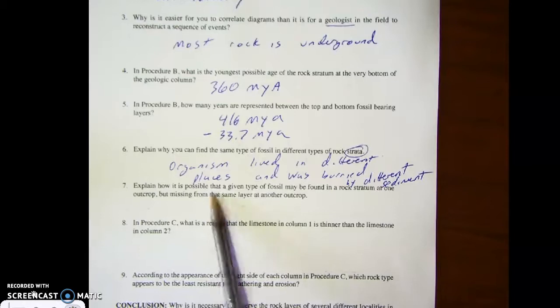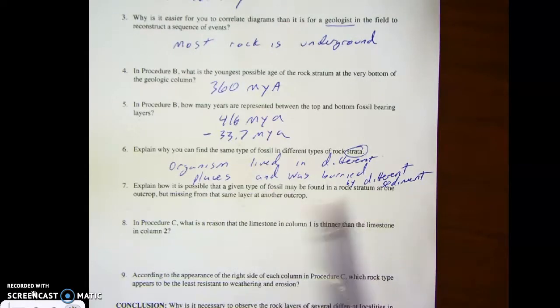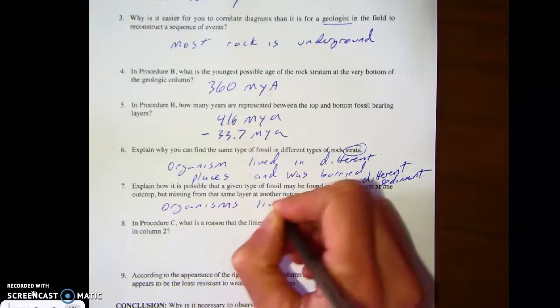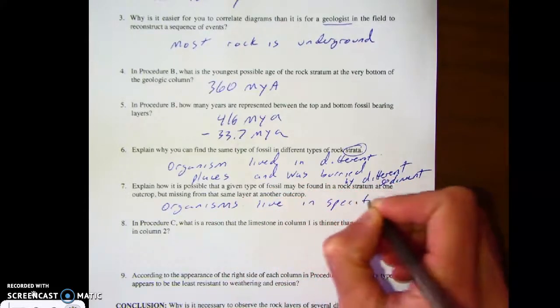For number seven, explain how it is possible that a given type of fossil may be found in a rock stratum at one outcrop, but missing from another. Well, remember, these are living organisms. It doesn't mean that they always stayed in the same place. Maybe there is a reason why they were in one location and not another. In the case of ocean water, how salty the ocean is can determine where a creature might live and might not. Sometimes creatures like to live near the mouth of a river where it's spilling into the ocean - there's more fresh water and nutrients there. There could be a whole variety of different reasons, but organisms live in specific habitats.